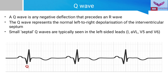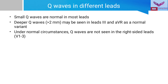AVL, V5, and V6. Small Q-waves are normal in most leads. Deeper Q-waves, i.e. more than 2 mm, may be seen in lead 3 and AVR as a normal variant. Under normal circumstances, Q-waves are not seen in the right-sided leads, i.e. the precordial leads V1 to V3.